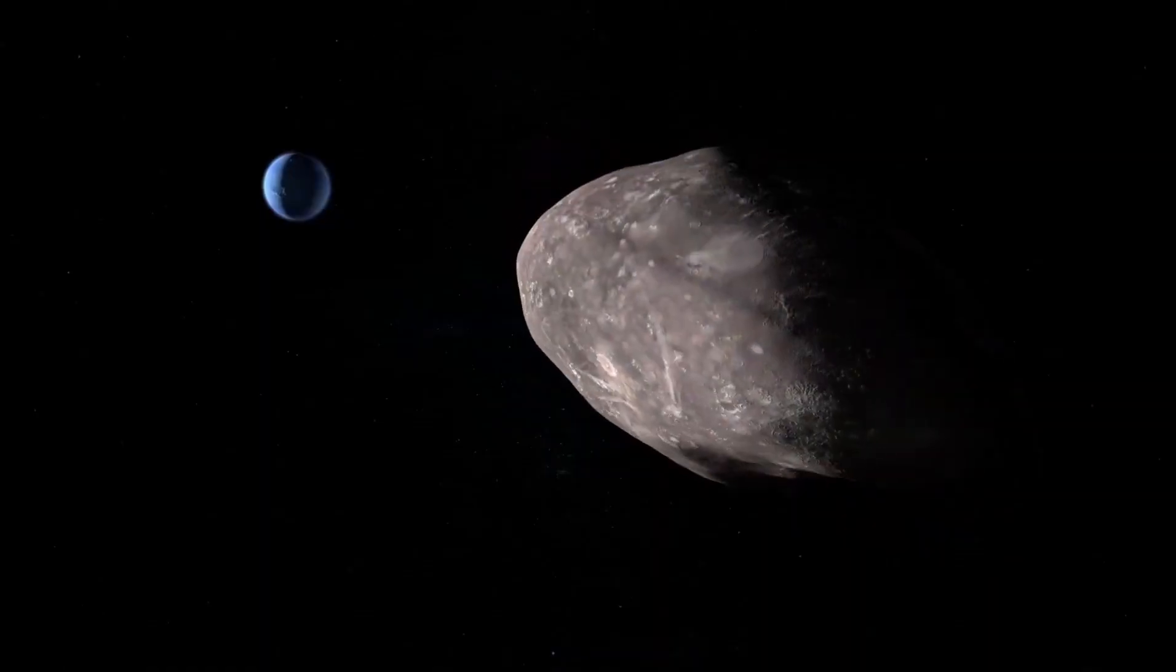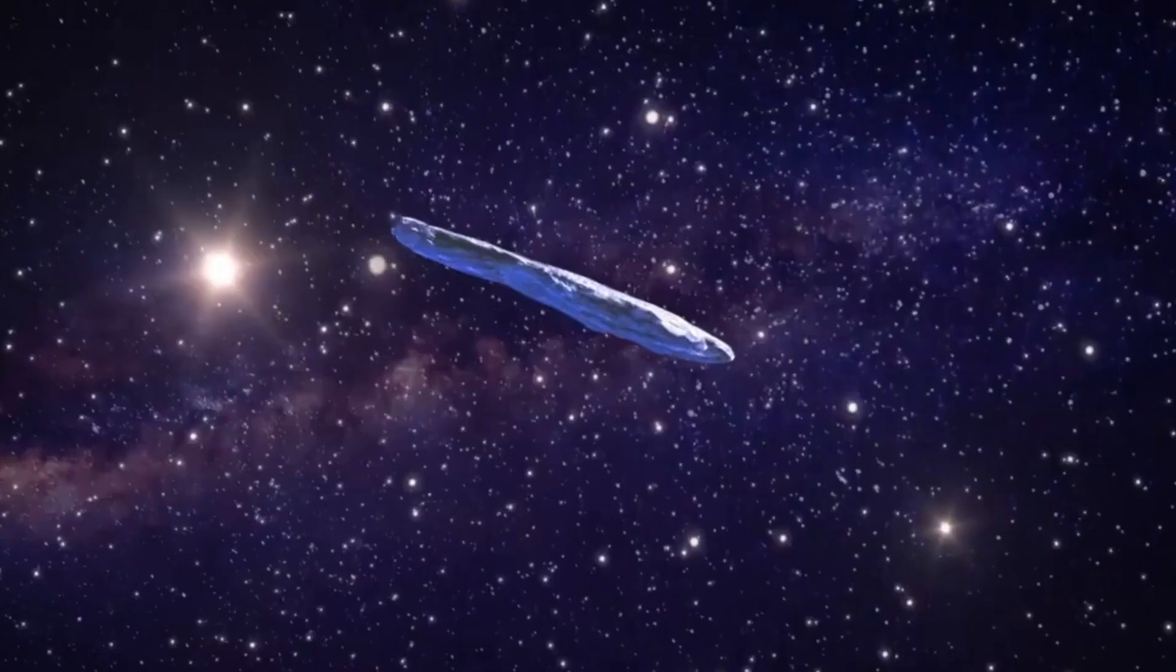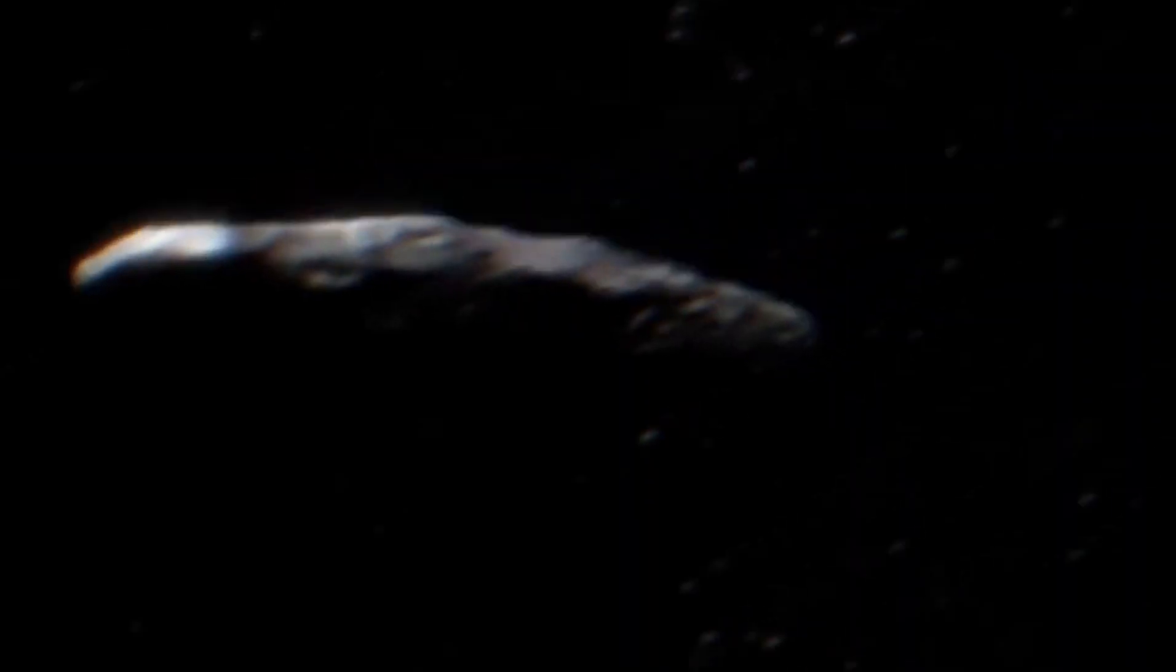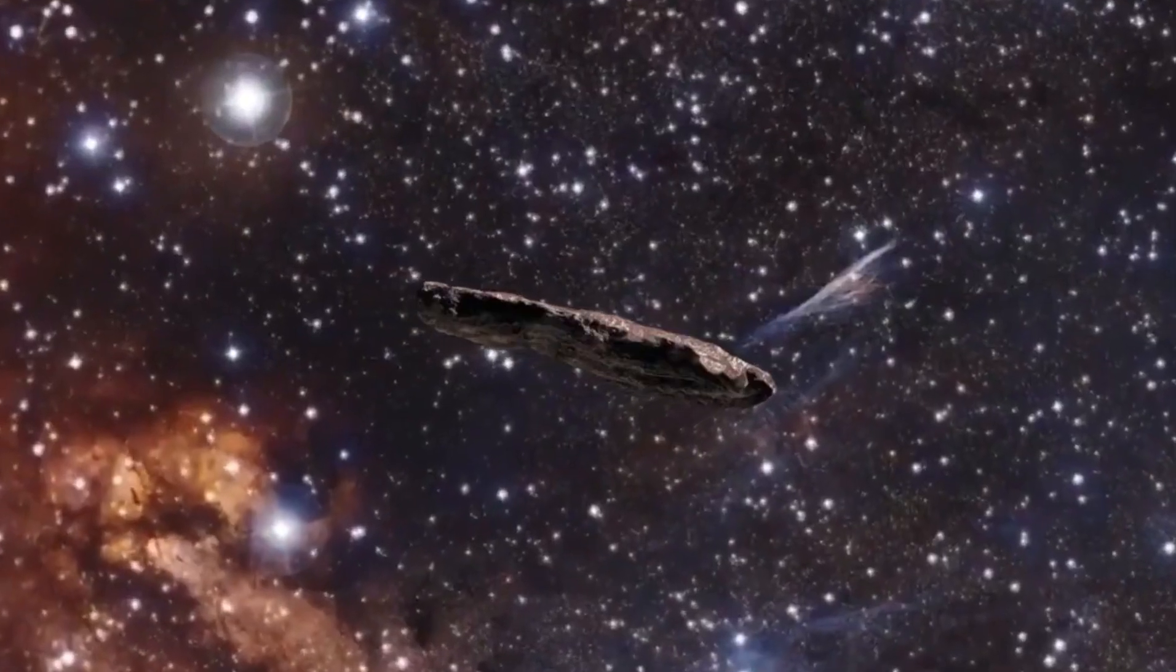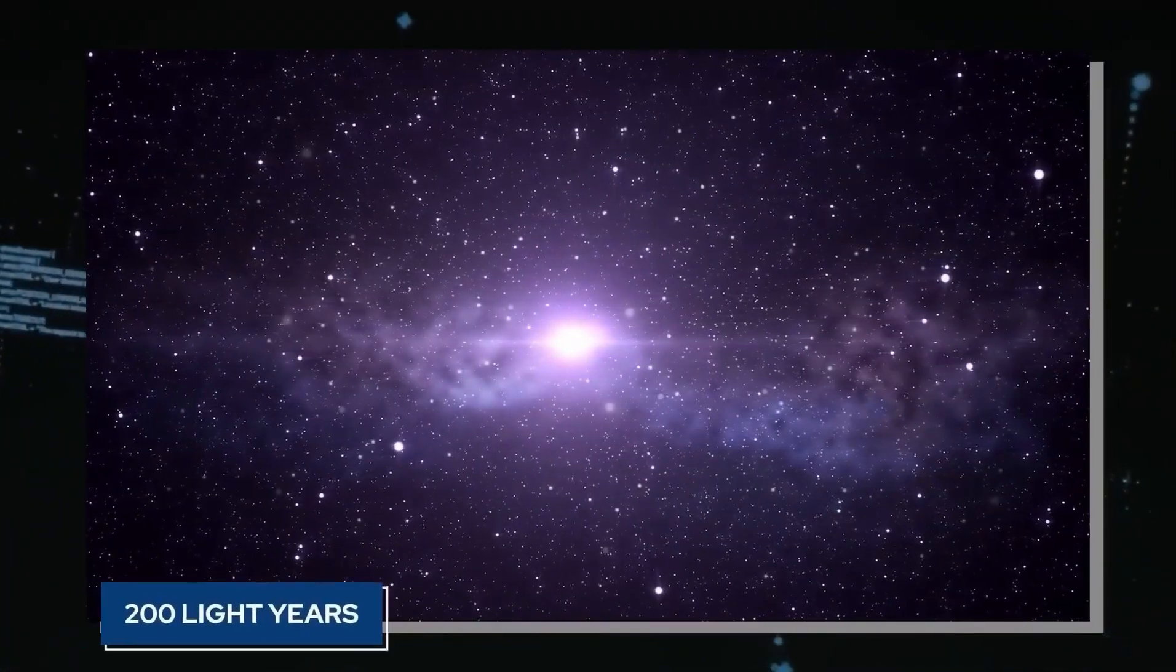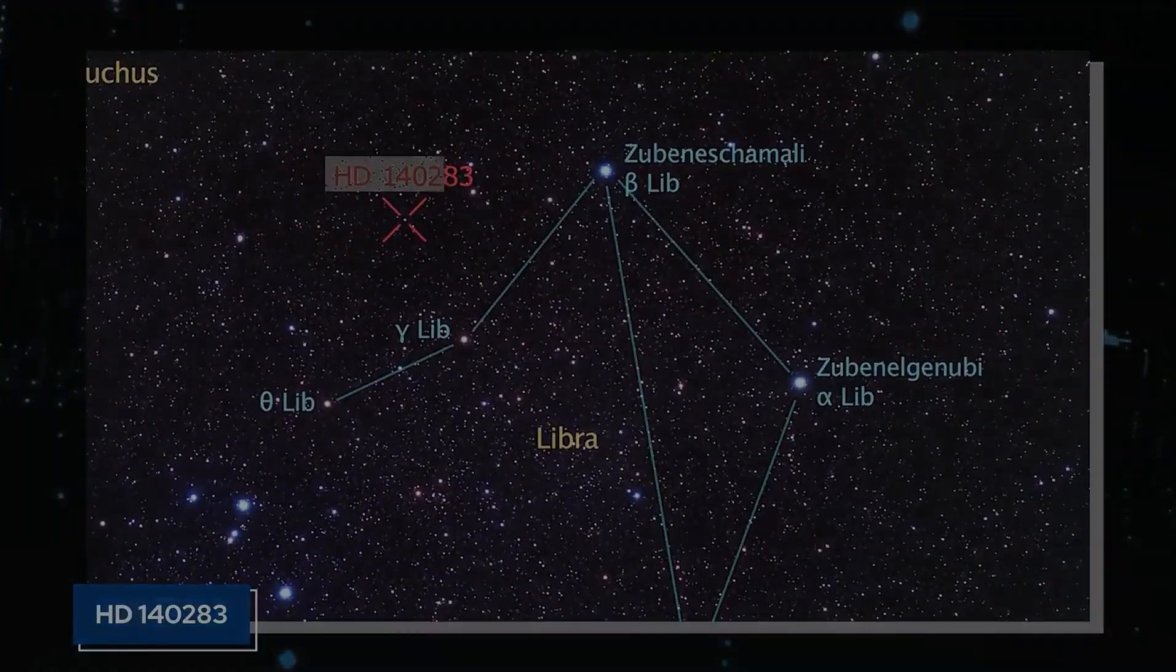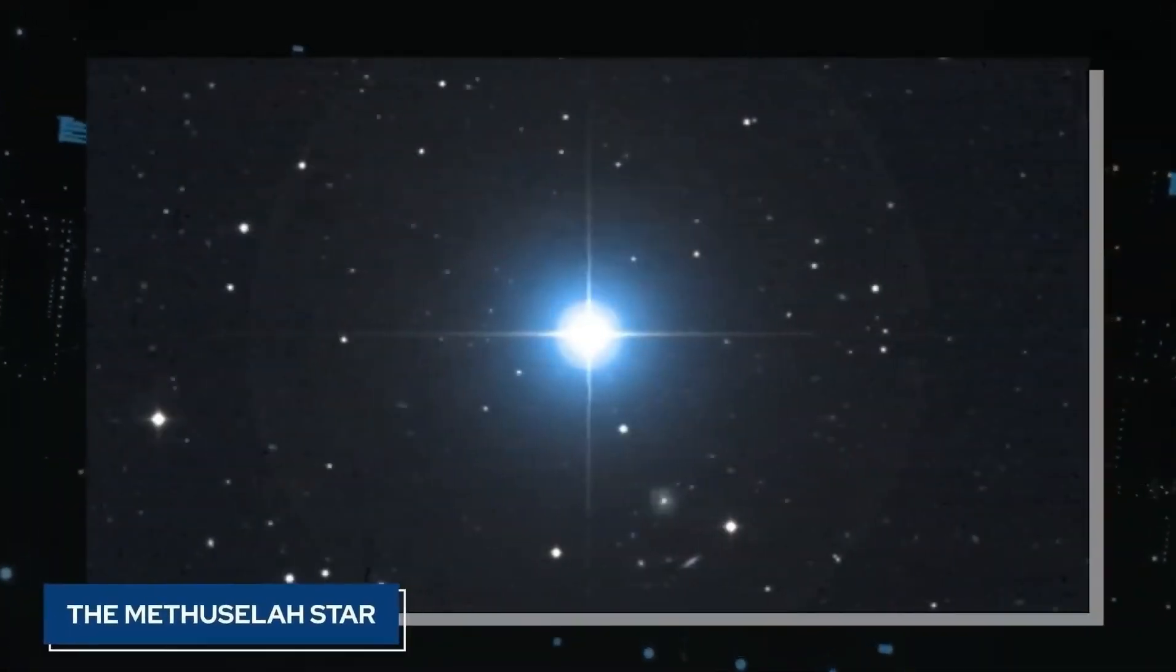This is believed to be the smallest galaxy ever discovered at this distance, approximately 500 million years after the Big Bang. In a groundbreaking finding, a team of researchers from the University of Minnesota used the JWST to peer more than 13 billion years into the past and discovered an extraordinarily tiny galaxy that has been developing stars at an extremely fast rate given its dimensions.